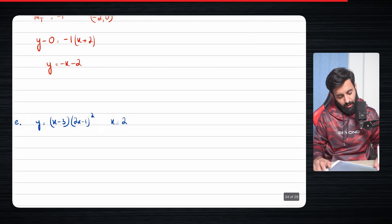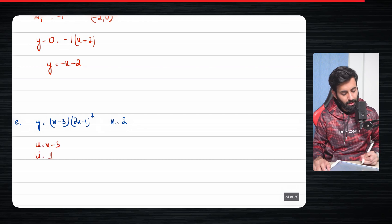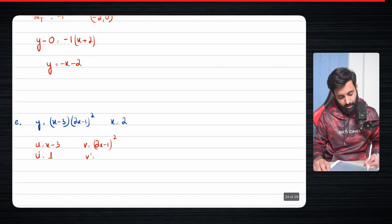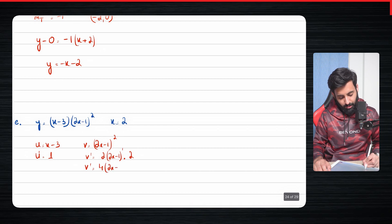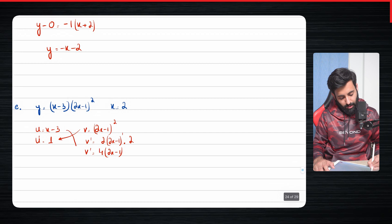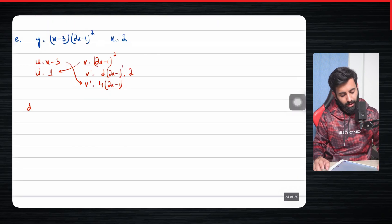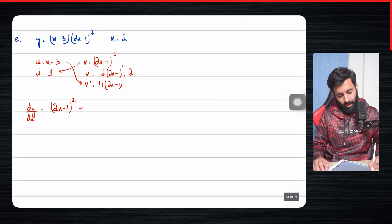We can't differentiate this straight away, so first we write down what u is, which is x minus three, meaning u prime equals one. Then v is two x minus one, the whole thing squared, which means v prime equals two into two x minus one to the power one, multiplied by two — so v prime equals four into two x minus one. Then dy/dx equals v·u prime plus u·v prime: that is (2x − 1)² plus four times (x − 3)(2x − 1).